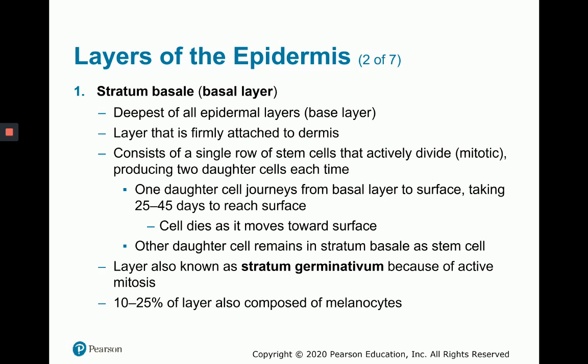Stratum basale is the deepest layer. Compared to the top corneal layer, it looks much more cell-like, while the corneal layer consists mainly of dead cells. The stratum basale consists of living cells firmly attached to the dermis below it. It contains stem cells, meaning cells in this layer are actively mitotic — they can divide and produce daughter cells that get added to the epidermis, which is necessary because the very top layer sloughs off cells every day.